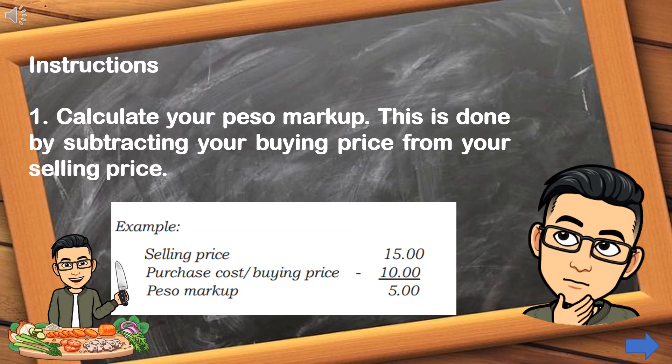Instructions on how to calculate markup percentage. Step number 1: Calculate your peso markup. This is done by subtracting your buying price from your selling price. For example: Selling price is ₱15.00, purchase cost/buying price is ₱10.00, so the peso markup is ₱5.00.